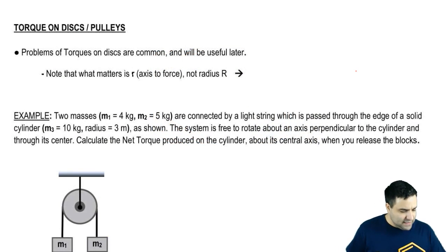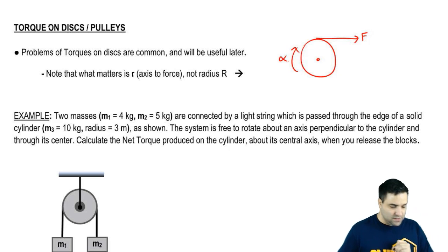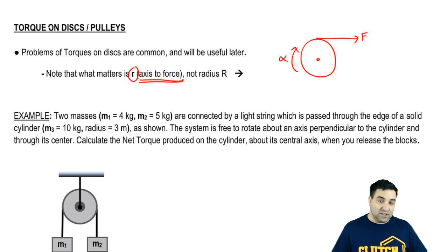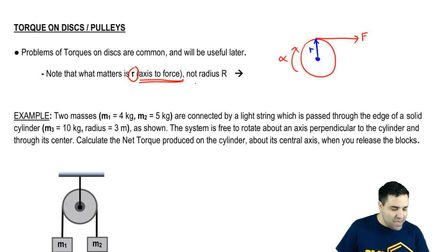All right, so let's say you have a disc or a pulley, and you're pulling on it like this with a force of F, which then causes it to spin like this. Now, what matters, as it says here, what matters is R, which is the distance from the axis to the force, from the axis which is usually in the middle to the force, this distance here R, that's what matters, not the radius.